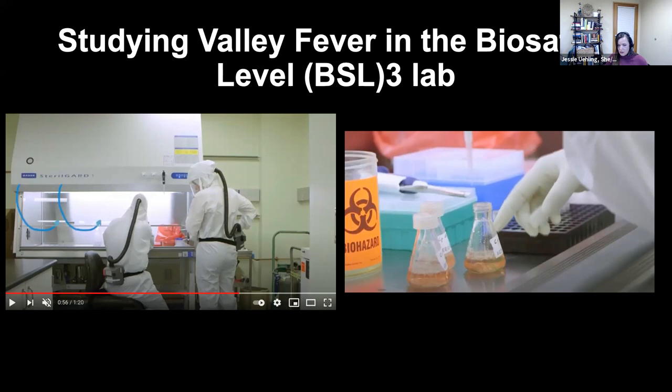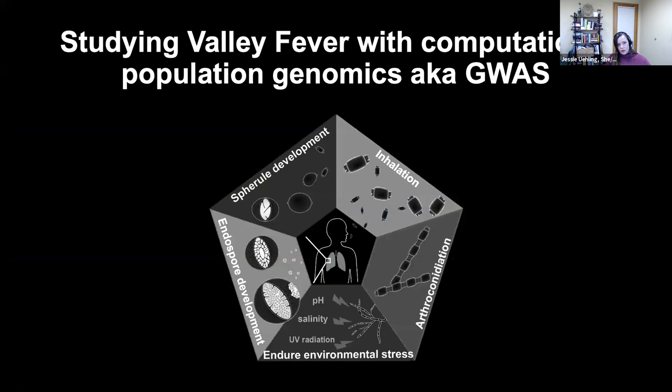There are a lot of precautions you have to take to study this organism in the lab. OSU has a BSL-3 and we're working on plans to renovate it — it's kind of a plan in transition. I'm hoping that we'll have the opportunity to study Coccidioides in the wet lab. But for the meantime, we're using a computational approach, or population genomics, to study Coccidioides.